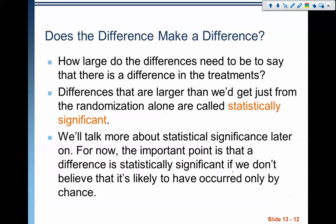When doing the comparison, we're looking at differences between the two treatments. When differences are larger than what we would expect to get from randomization alone, we call this statistically significant. This is a term with a lot of meaning that we'll go into deeply in inference — chapters 18 through 24. For now, just think of it as: if the differences are so large that they couldn't have come from randomization alone and there's actually something between the treatments causing the difference, then it's statistically significant.